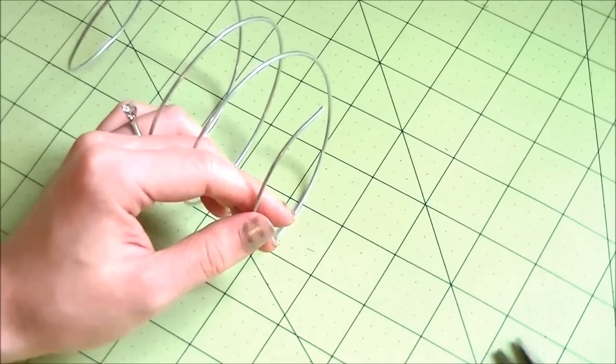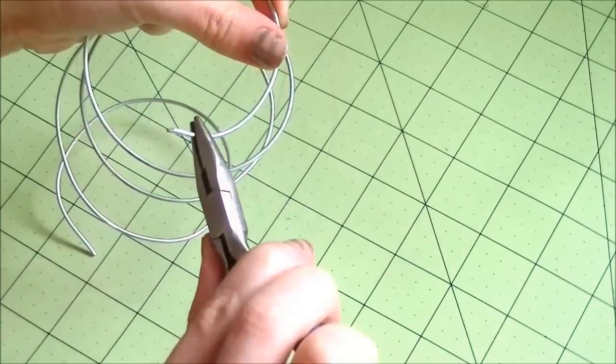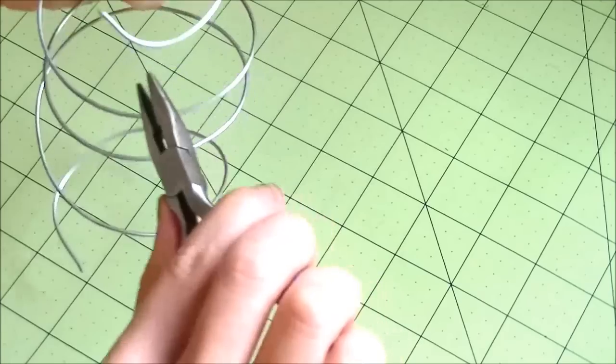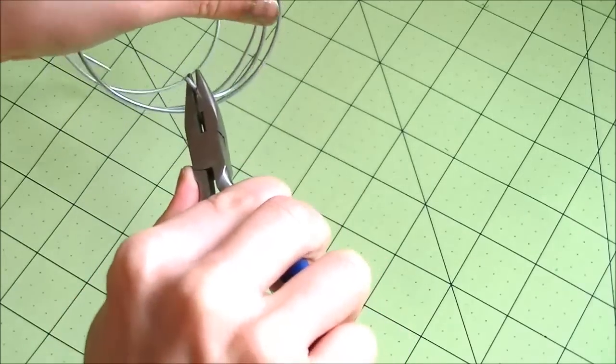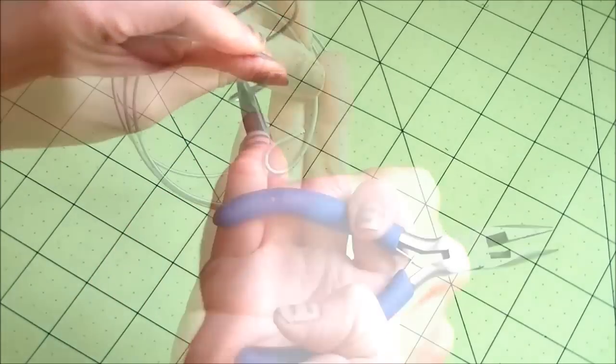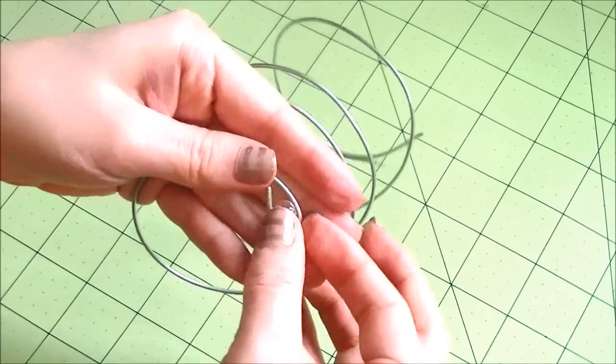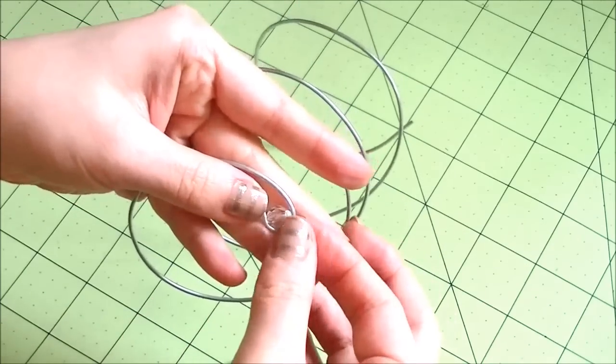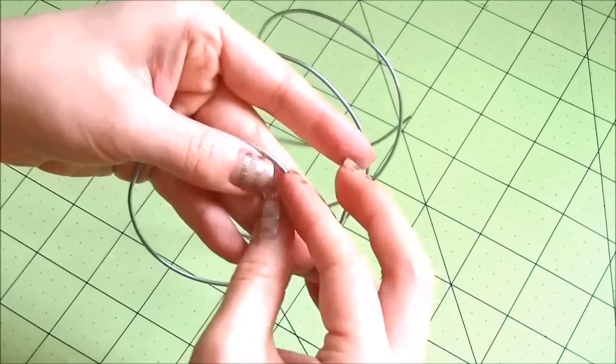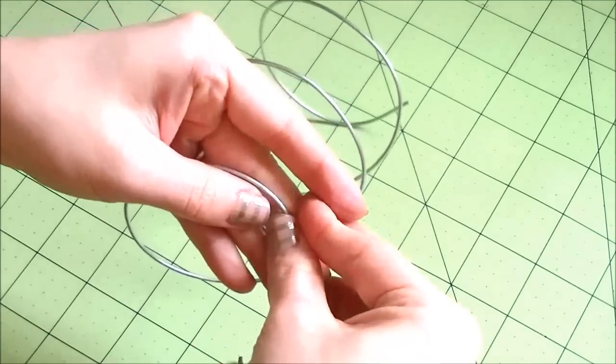Next take your round nose pliers and gently curl one of the ends about just less than 2 centimeters or half an inch. This is going to be the head of the snake. I plan to place a glass bead here later so if you're doing the same make sure the head is big enough for the bead.